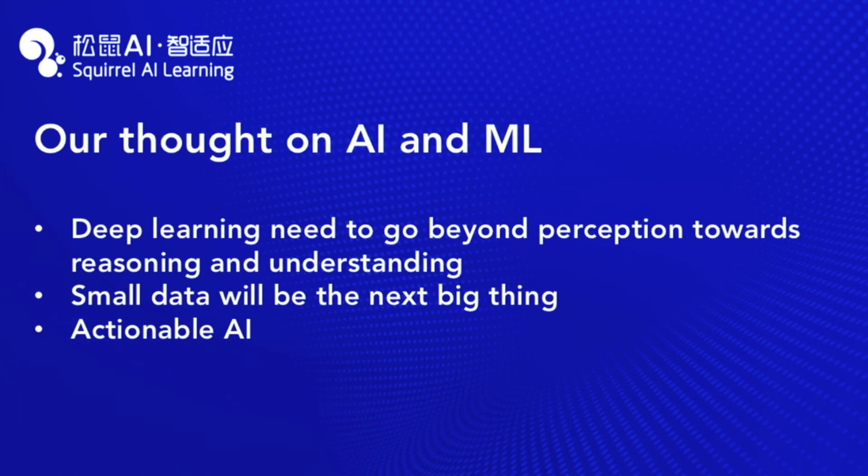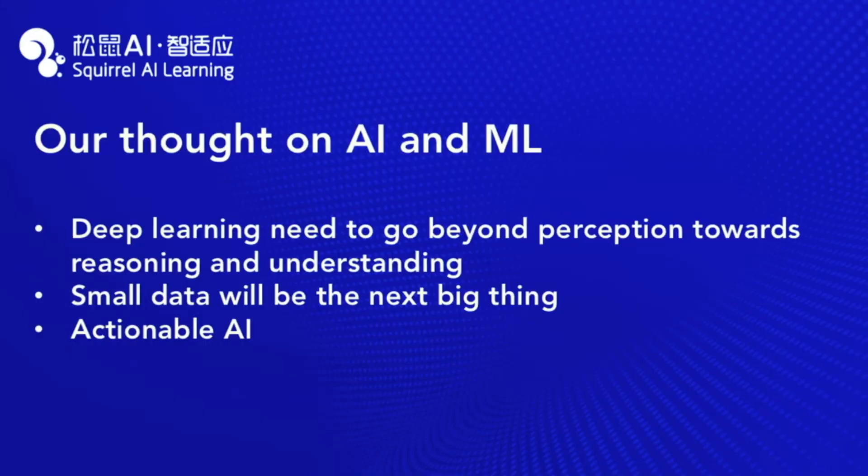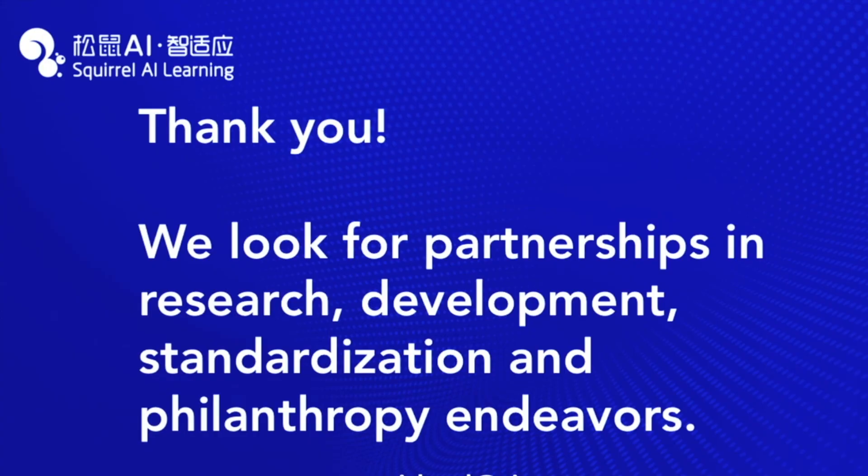To summarize: we are using a lot of techniques like deep learning, but deep learning is not adequate and not a very good fit for a lot of learning tasks. We need to go beyond just the perception part and get to more understanding and reasoning. Small data is actually more important in the education space because we don't have IoT-type devices generating zillions of data points. Actionable AI is really the key for the next generation. Thank you, and we look forward to partnership in research, development, standardization, and philanthropy with you.